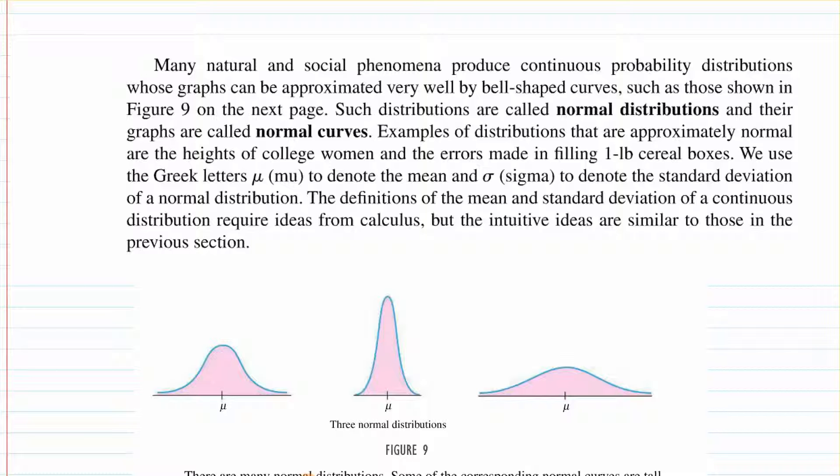Examples of distributions that are approximately normal are the heights of college women and the errors made in filling a one-pound cereal box. We use the Greek letter mu to denote the mean, which is right in the middle, and sigma to denote the standard deviation. When you see those two Greek letters, sigma and mu, you should know what those are.